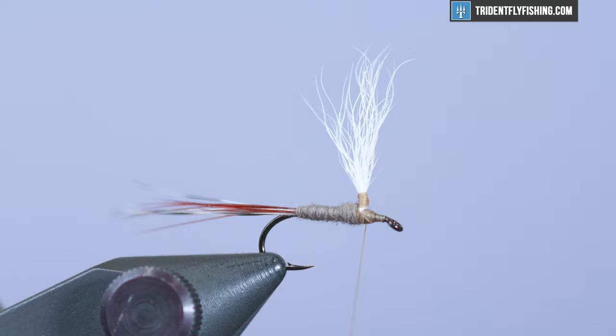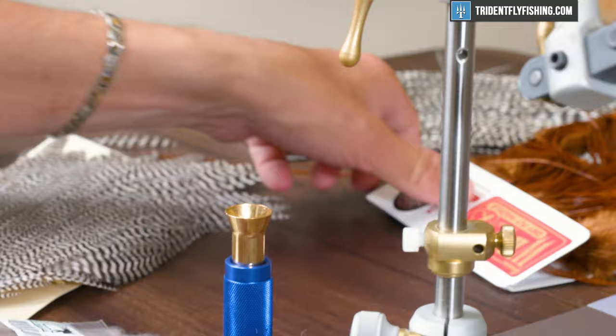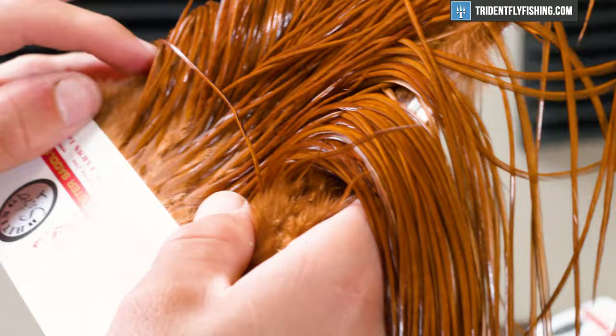Now that we have our body wrapped, we're going to move into some saddle hackle. You can use neck hackle, but I just tend to like the performance of saddle a little better. You get a little more to hold in your hand. Good. It's a good size right there. I need a brown and a grizzly.